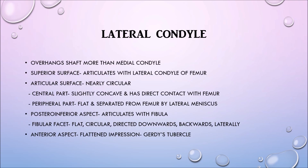Moving on to the lateral condyle — it also has five points. The lateral condyle overhangs the shaft more than the medial condyle. Its superior surface articulates with the lateral condyle of the femur. Its articular surface is nearly circular. The central part of the articular surface is slightly concave and has direct contact with the femur. Its peripheral part is flat and separated from the femur by the lateral meniscus.